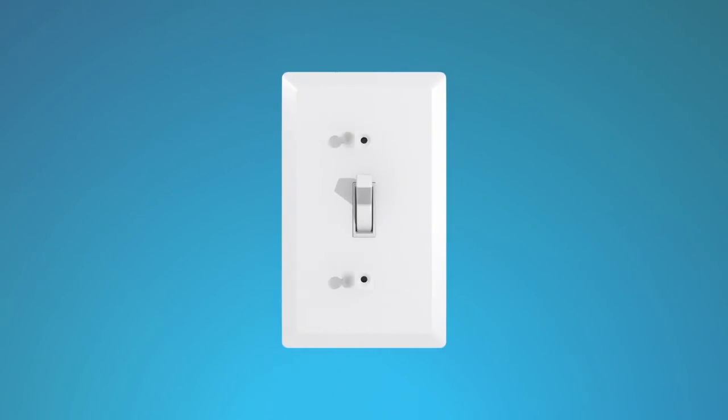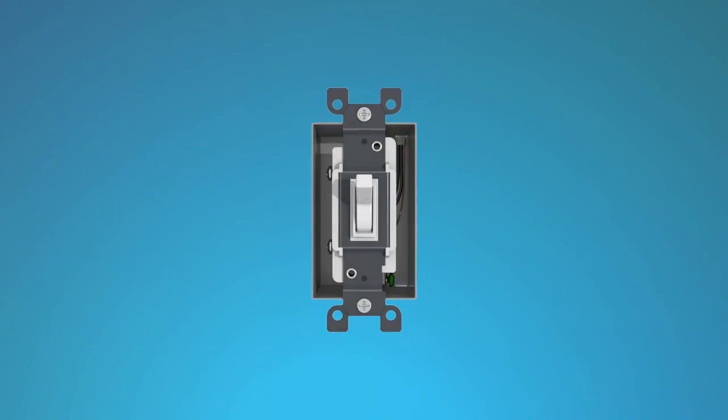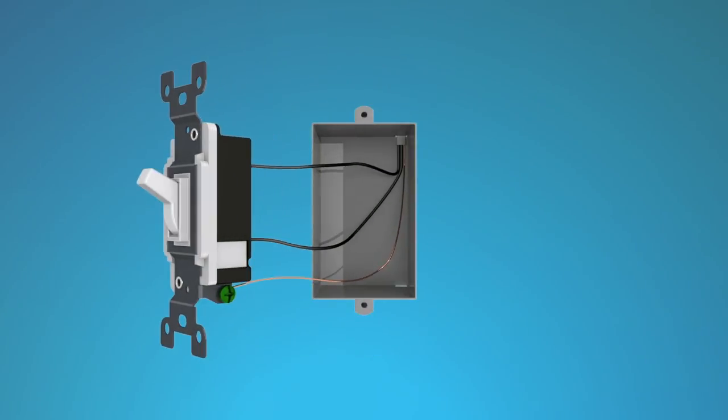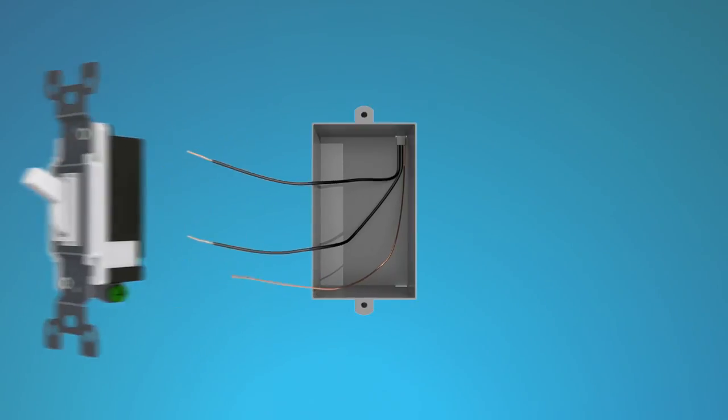Remove the wall plate from the switch you'll be replacing. Remove the switch mounting screws and pull the switch away from the wall. You'll see three wires from your wall box connected to your switch. Disconnect all the wires from the switch by loosening the screws and unhooking the wires.